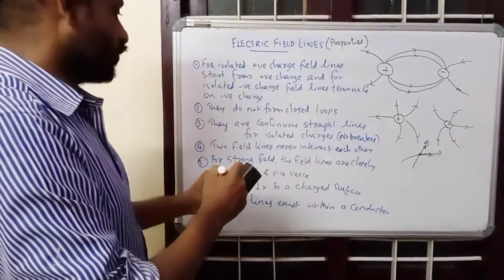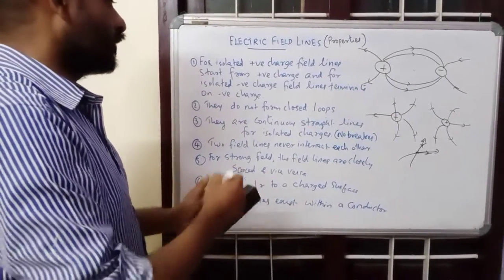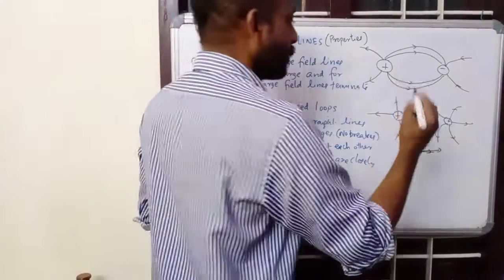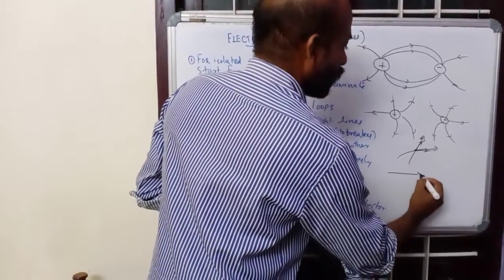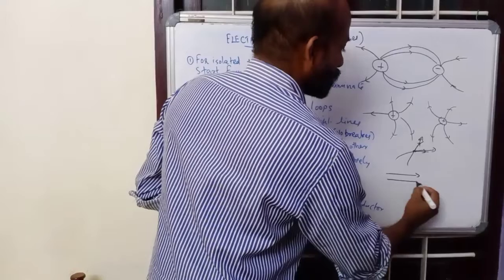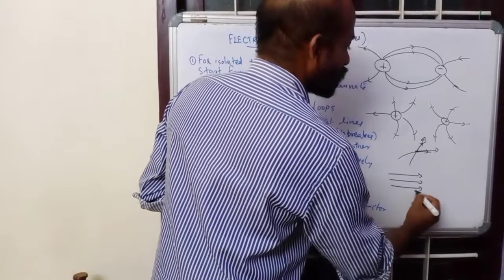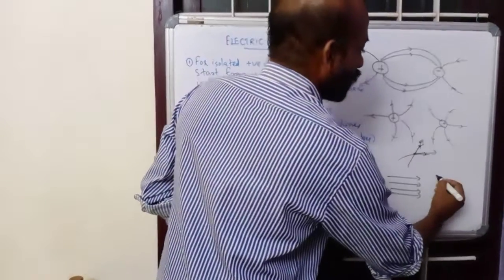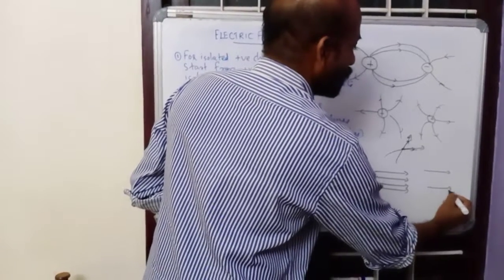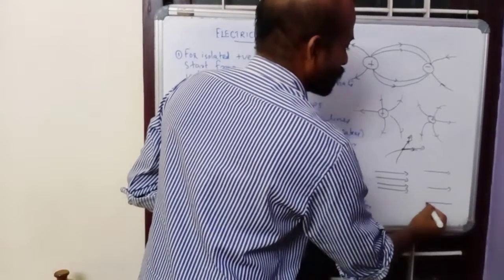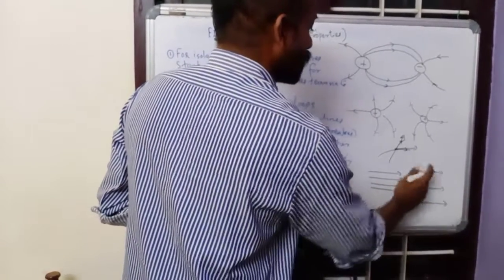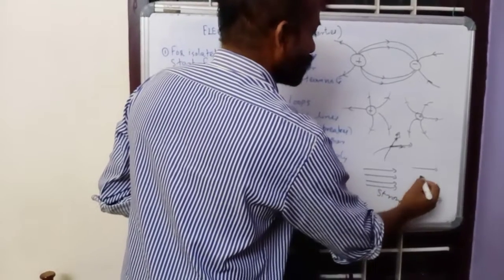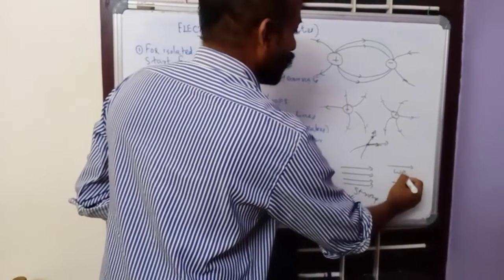For a strong field, the field lines are closely spaced, and vice versa. For a uniform field, we can draw parallel straight lines. If the field is very strong, the field lines will be very close together; if the field is weak, the field lines will be spaced apart. That is the difference between strong and weak fields.